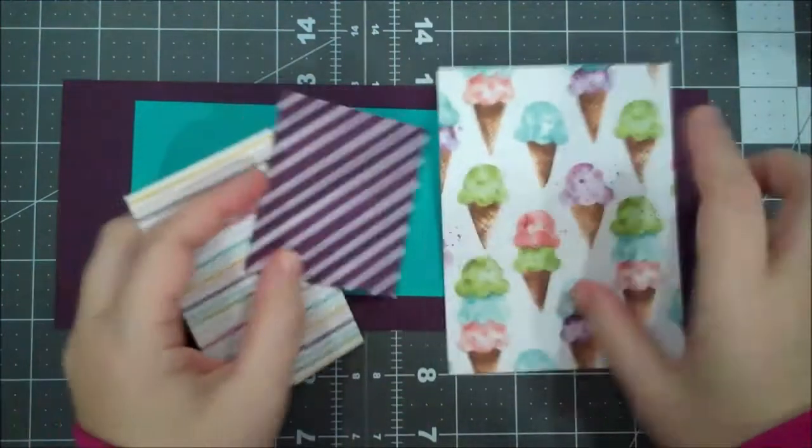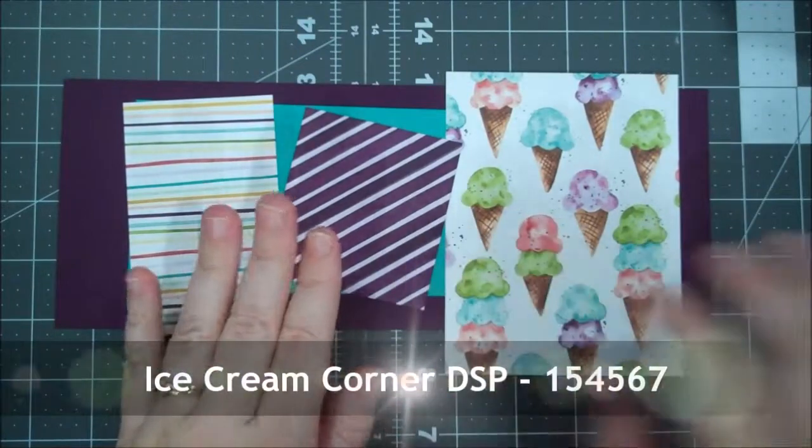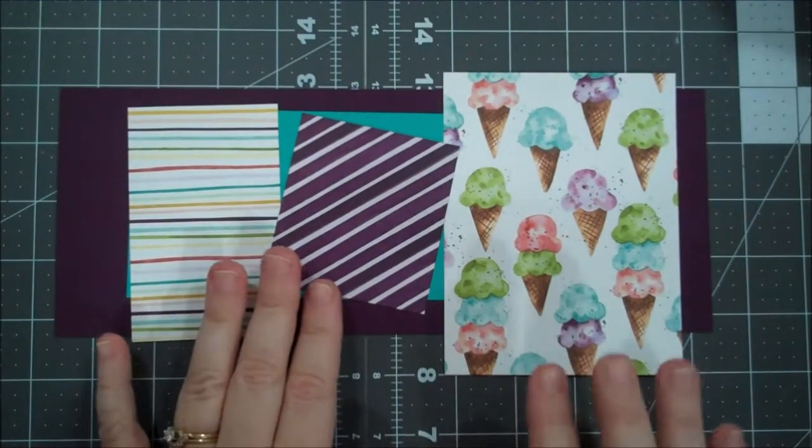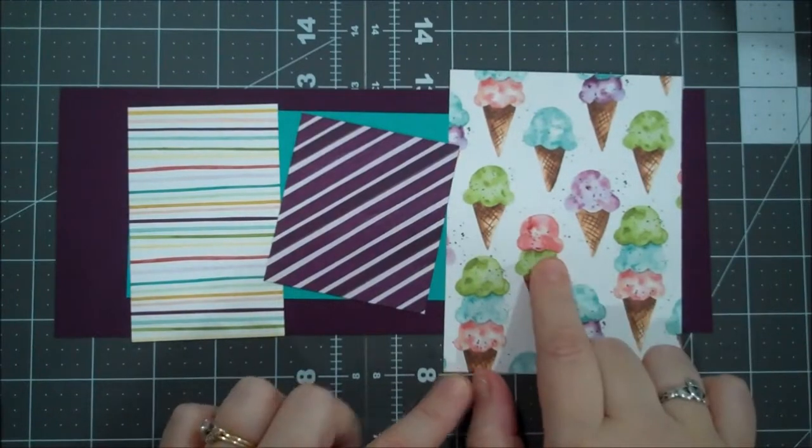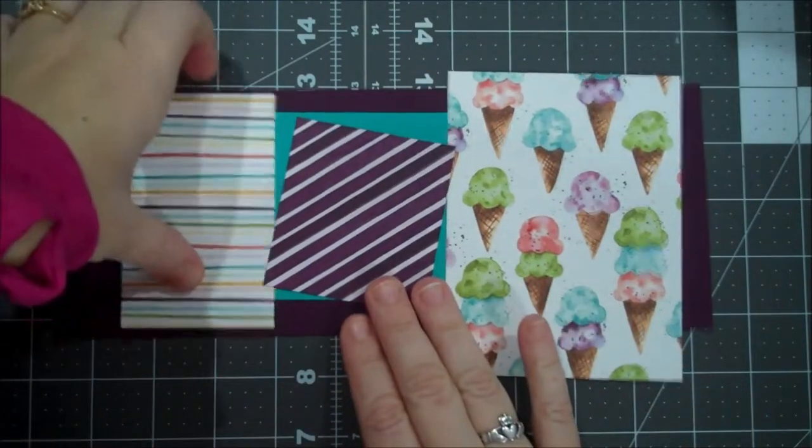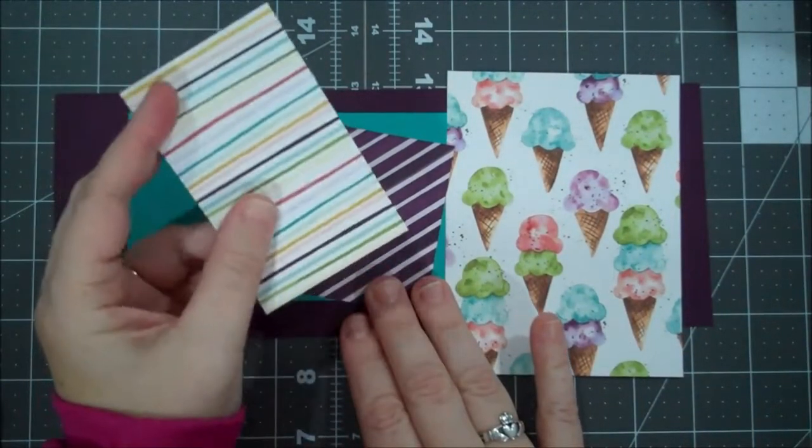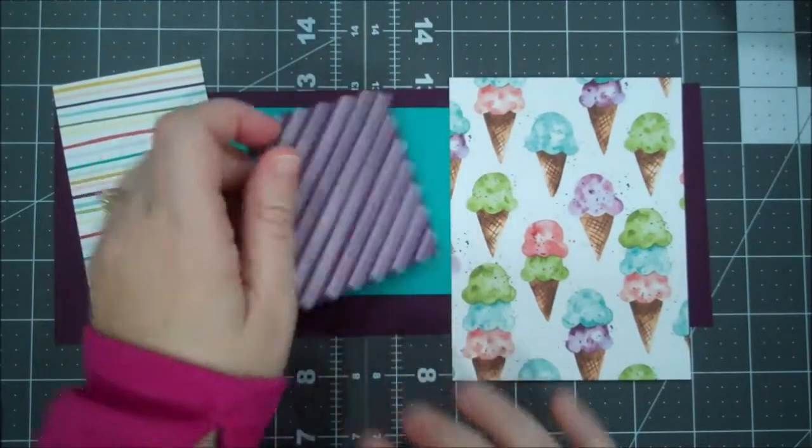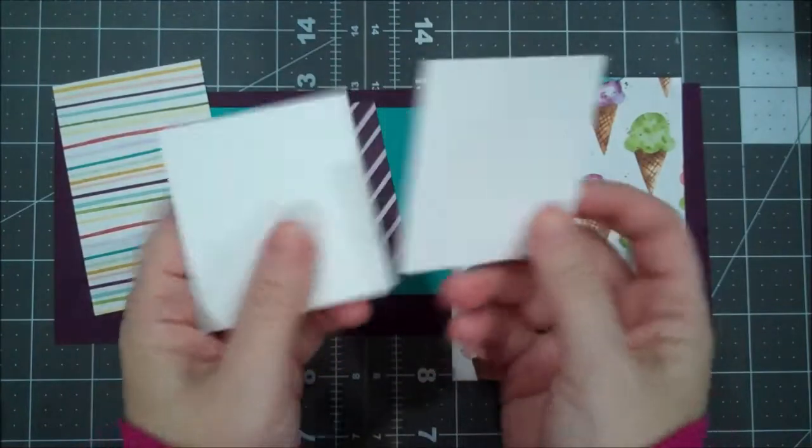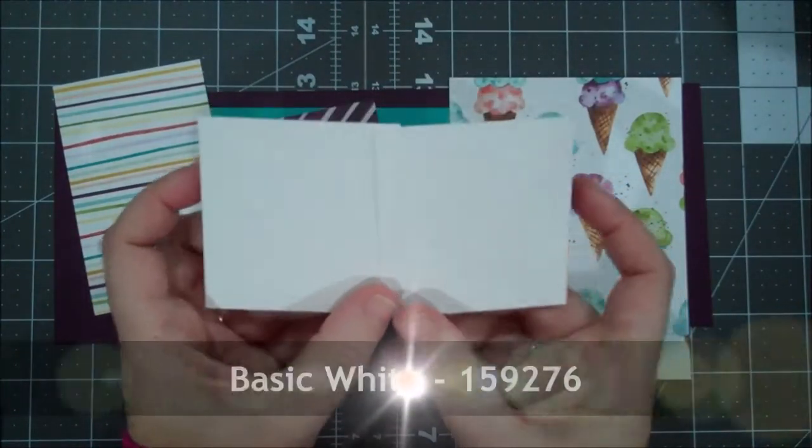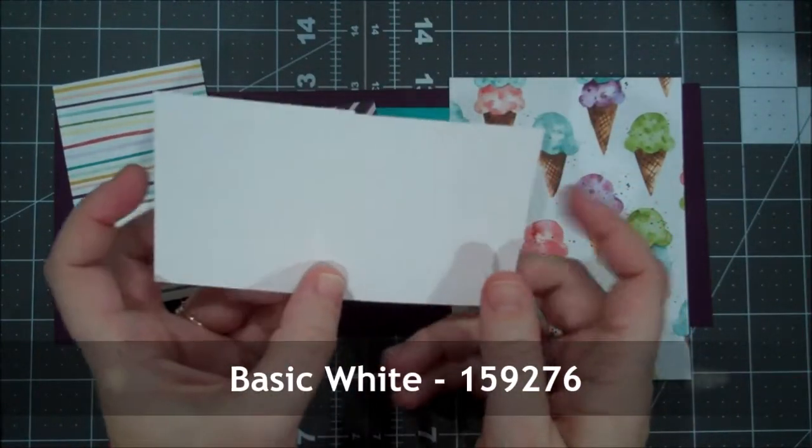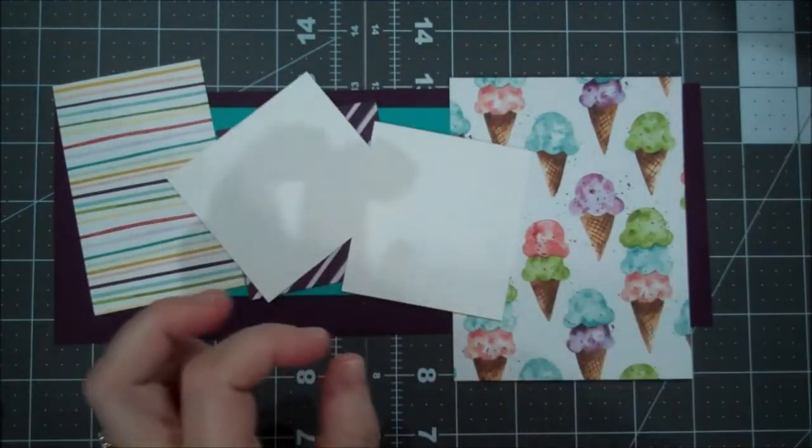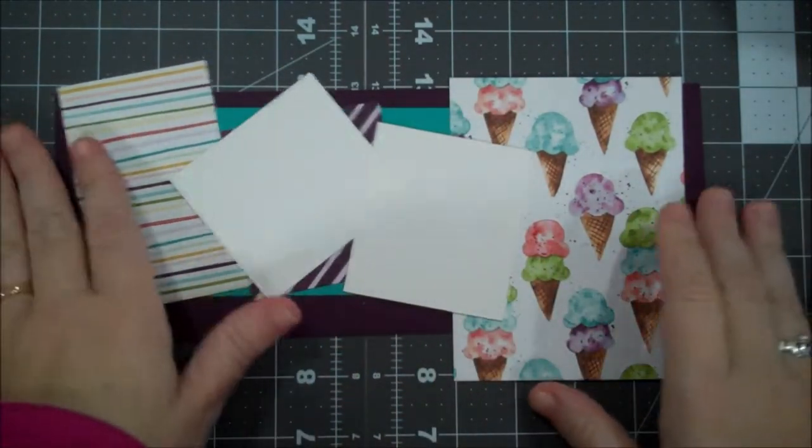I am using the designer series paper that coordinates with this suite, it is called Ice Cream Corner DSP and this piece is four by five and a quarter. I have a piece here that is four by two and a half and then another piece that is three by two and three quarters. And then we're going to use two more pieces of Whisper White that are both three by two and three quarters and then of course we'll do some extra stamping on another scrap.